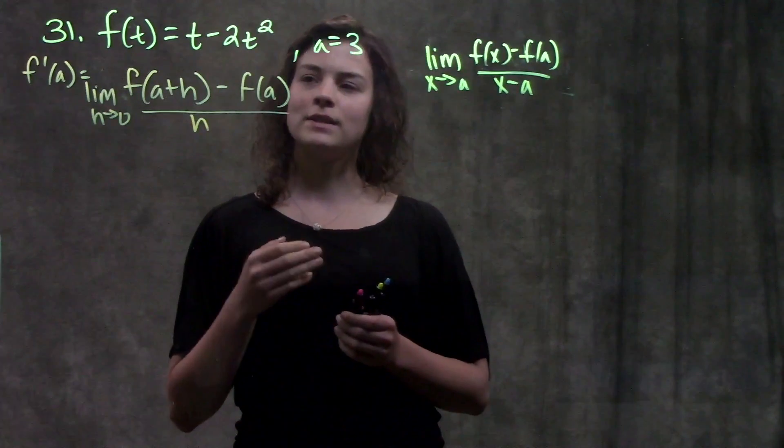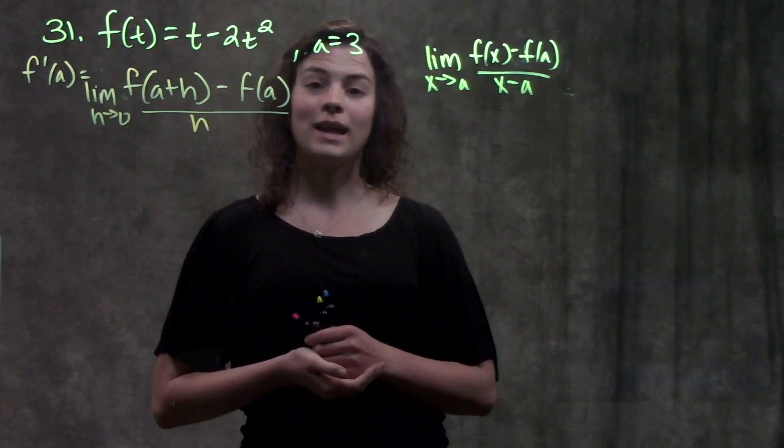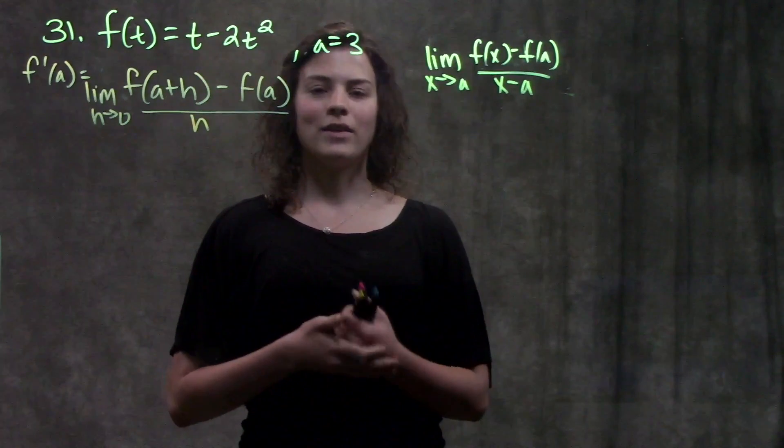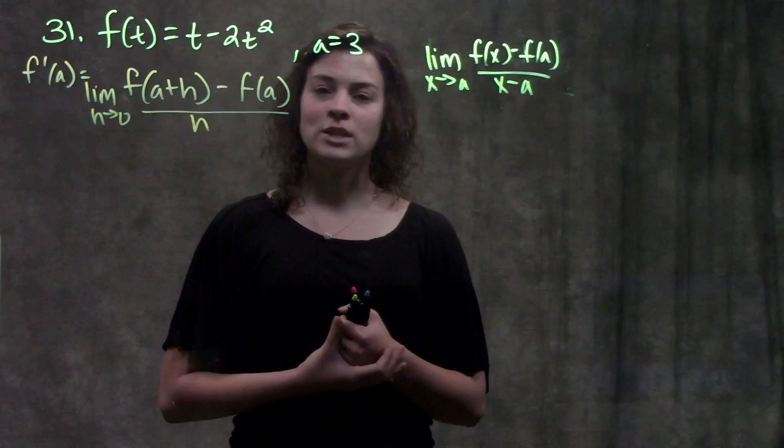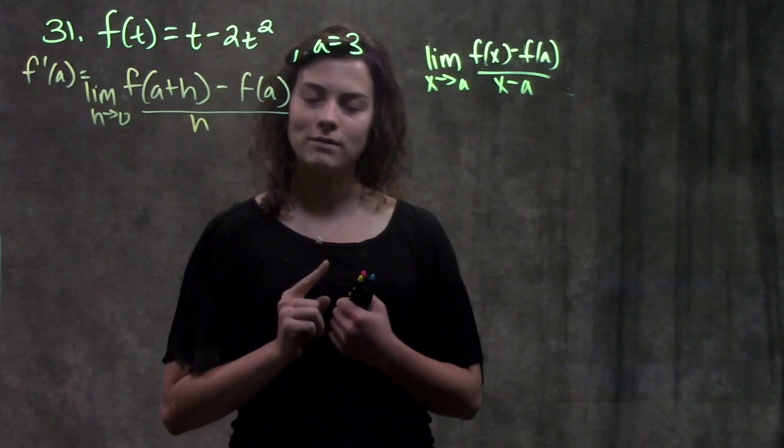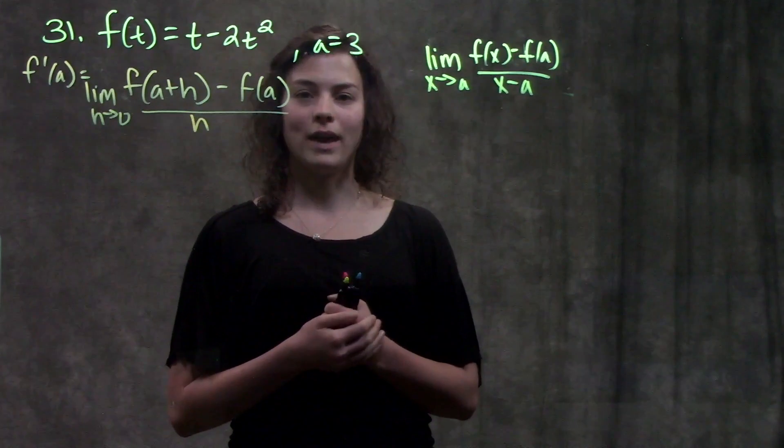This is number 31 in your book. It gives us this equation, and it's interested in the point a equals 3. They're asking for the equation of a tangent line. In order to write the equation of a line, we need two things: one, we need its slope, and two, we need a point on the line.